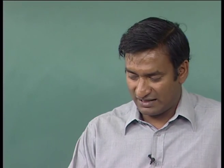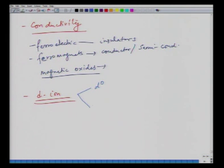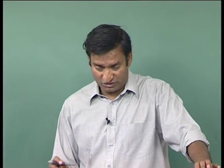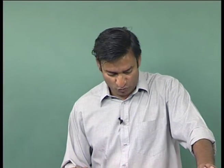Another criterion is the nature of the d-ion. In ferroelectrics you require a d⁰ ion; in ferromagnets you require a dⁿ (partially filled) ion. These two requirements are quite opposite and paradoxical, placing a conflicting constraint on the system that is not yet well understood.